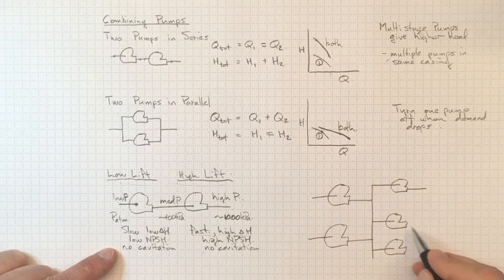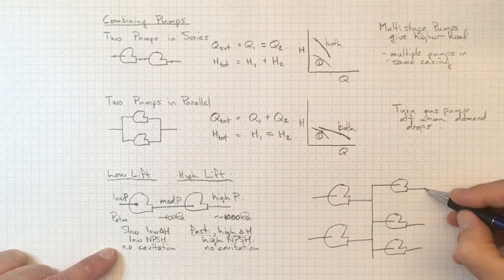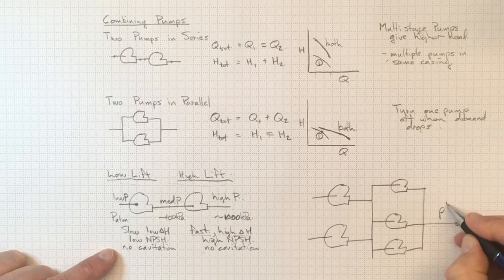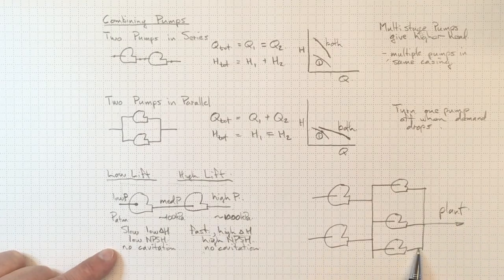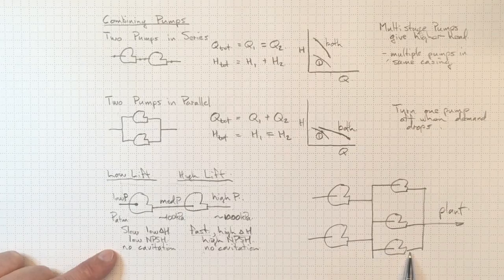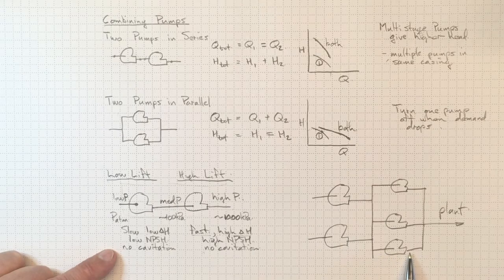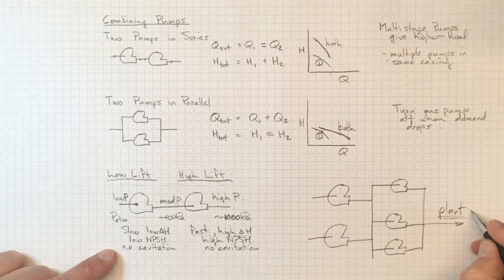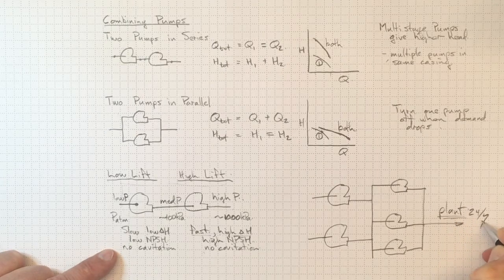And we could combine these outputs all together to go off to supply our city or our process plant. So this is a practical configuration where you could be combining multiple pumps in parallel in series in order to meet practical piping objectives. The supply to the plant, which has got to be operating 24-7.